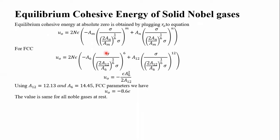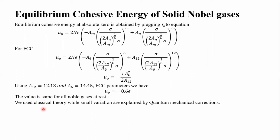In the case of FCC, these values are given by the table which I previously showed in the first part. We plug in those values. The result — U-normalized will be minus 8.6 times epsilon-normalized. This value is almost the same for all the noble gases having FCC structure, but there are slight variations. These slight variations are due to quantum mechanical effects and corrections.